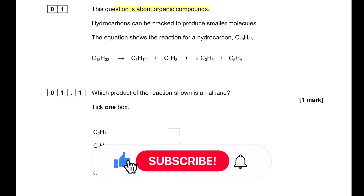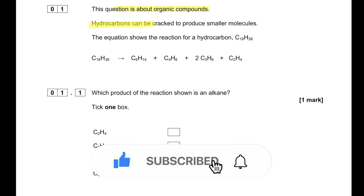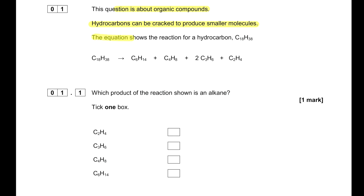This question is about organic compounds. Hydrocarbons can be cracked to produce smaller molecules. The equation shows the reaction for a hydrocarbon C18H38 which has been cracked to produce an alkene and many alkanes. An alkane has a general formula of CnH(2n+2), so we can see C6H14 is an alkane.